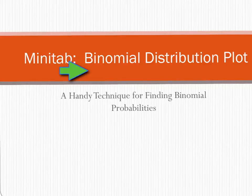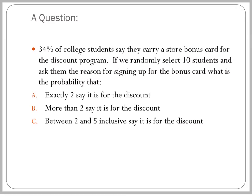For our example, 34% of college students say they carry a store bonus card for the discount program. If we randomly select 10 students and ask them the reason for signing up for the bonus card, we want to find: the probability that exactly two say it's for the discount, more than two say it's for the discount, and between two and five inclusive say it's for the discount. The word inclusive means that two and five are both included in our probability.